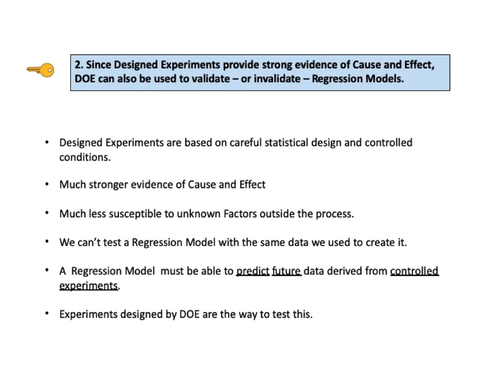Key to understanding number 2 says: since designed experiments provide strong evidence of cause and effect, DOE can also be used to validate or invalidate regression models. Designed experiments are based on careful statistical design and controlled conditions, and provide much stronger evidence of cause and effect than inferential statistics. They are much less susceptible to unknown factors outside the process. DOE can be used to validate or invalidate regression models: if a regression model is to be a valid model of cause and effect, it must be able to predict future data from controlled experiments designed by the discipline of DOE.